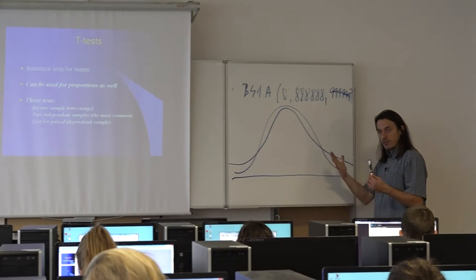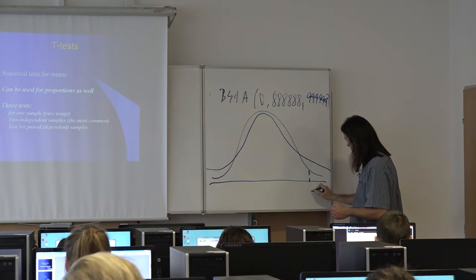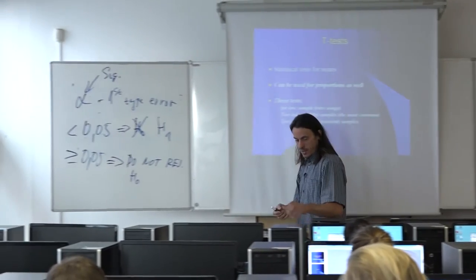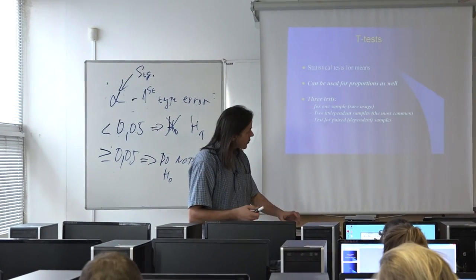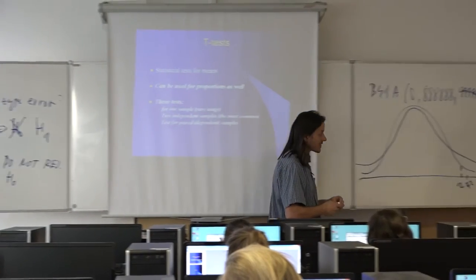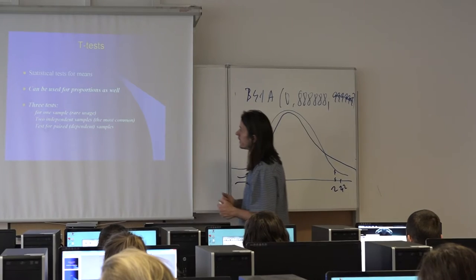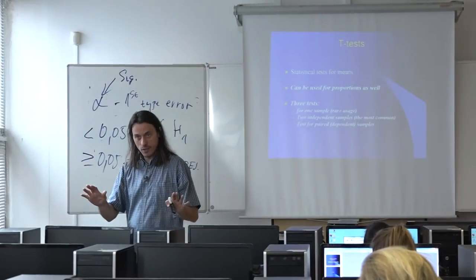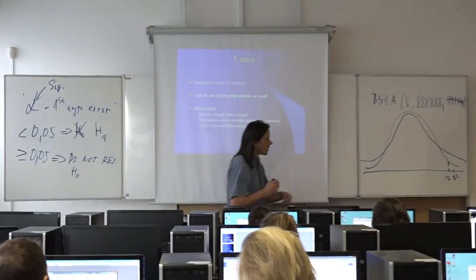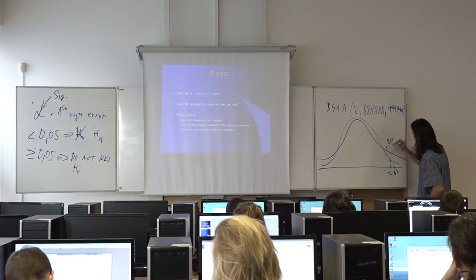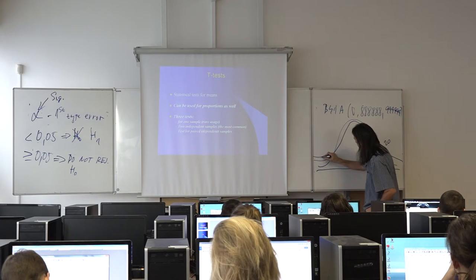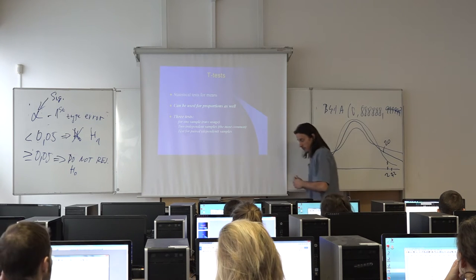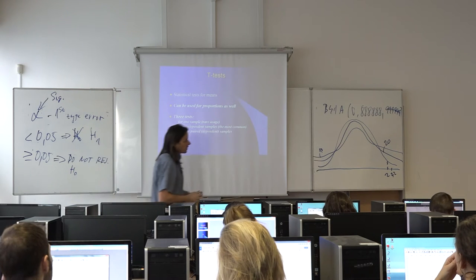This means that instead of a critical value like 2, we might use something like 2.52. The critical quantile values from the normal distribution are replaced by T-distribution values. Unlike the normal distribution, the T-distribution is influenced by sample size. With 20 values it looks one way; with only 10 values, the tails are even heavier.